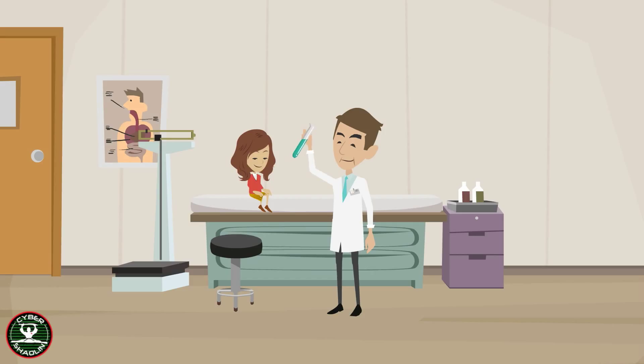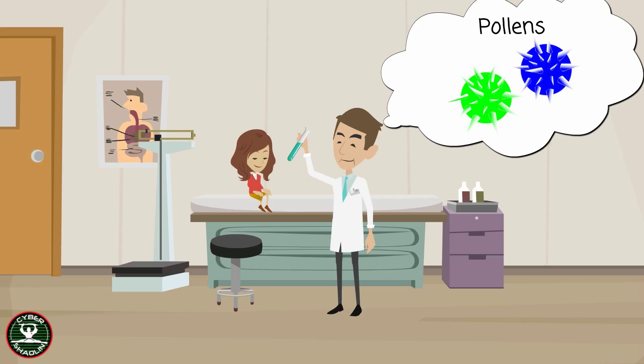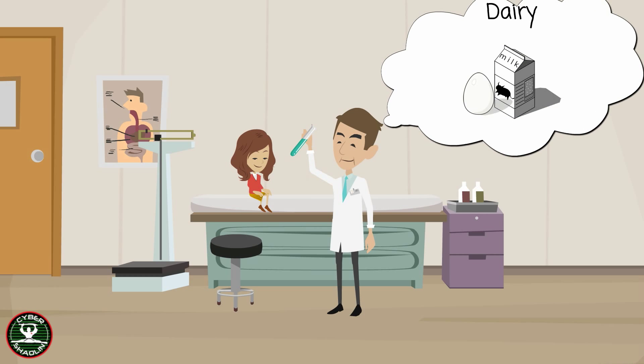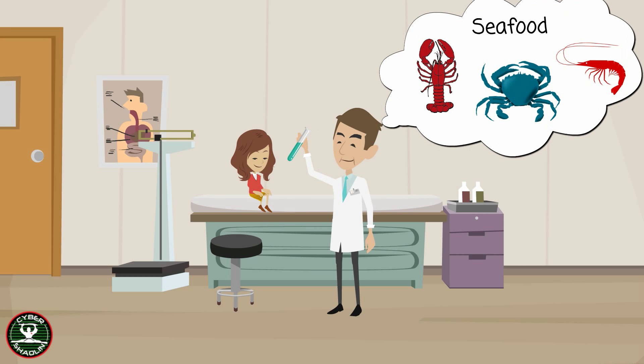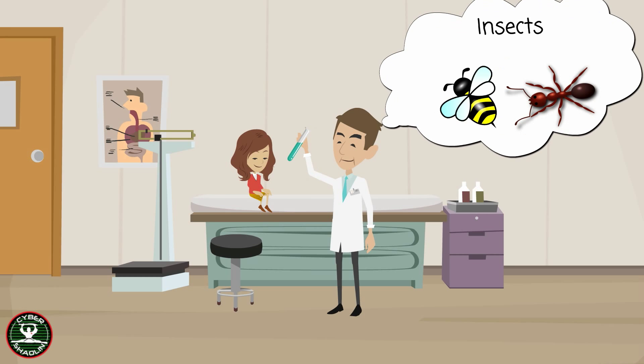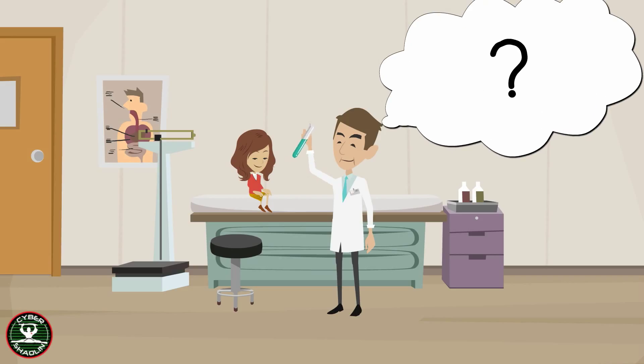A simpler way to understand this is by using the example of allergen testing. Say you are allergic to something but you don't know what, then the doctor will test you for different types of allergens, such as pollen, dairy products like egg or milk, seafood, nuts, insects, or something altogether random to determine what you are allergic to or should I say exploitable to.